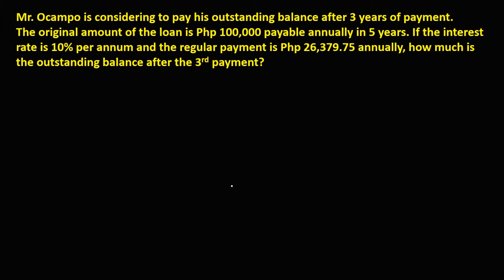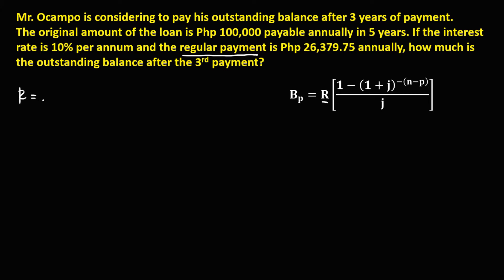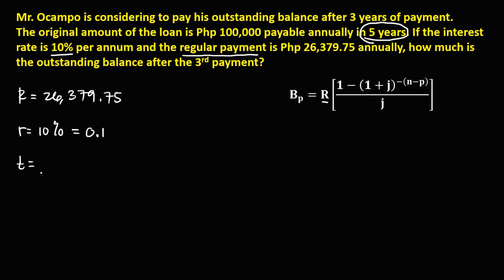To solve this problem, we're going to use this formula, but first we need to list all the given. For R, the regular payment, that's 26,379.75 pesos. For the rate, that's 10%, or 0.1 in decimal. For the time, since payable annually in 5 years, the time is equal to 5. For M, since the regular payment is annually and the interest rate is per annum, M is equal to 1. So the interest rate per period, J, equals R over M, which is 0.1 divided by 1, so J equals 0.1.